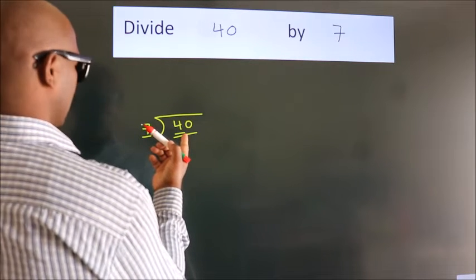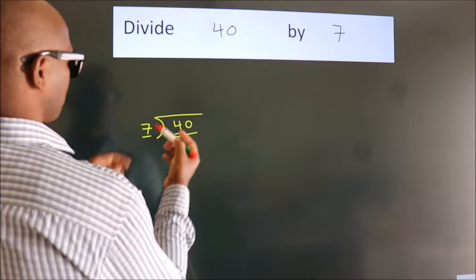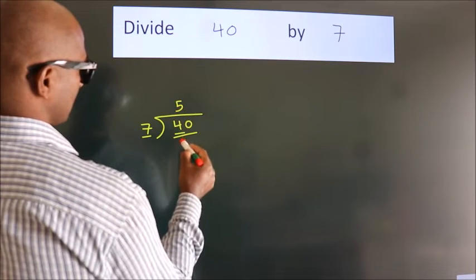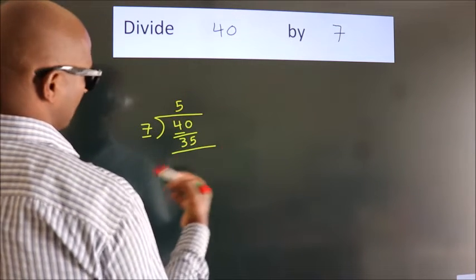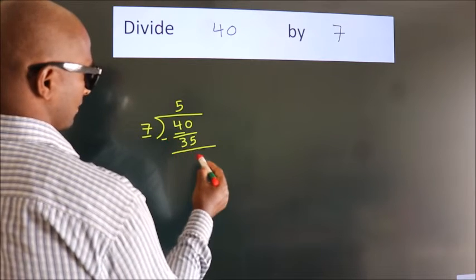A number close to 40 in the 7 table is 7 fives, 35. Now we subtract and get 5.